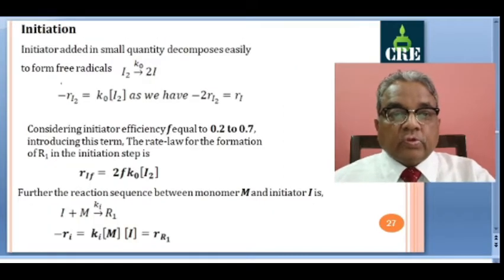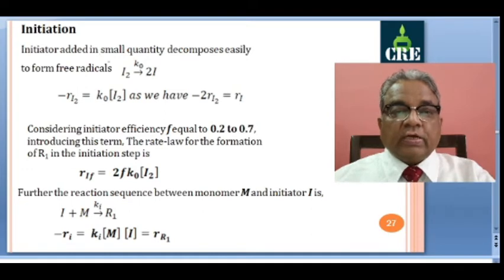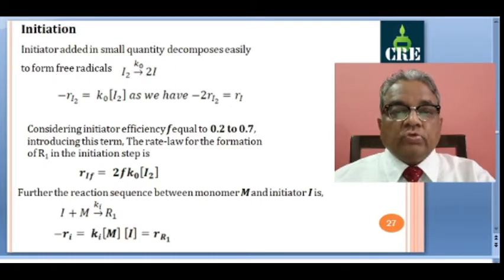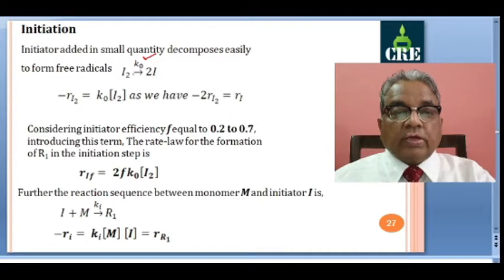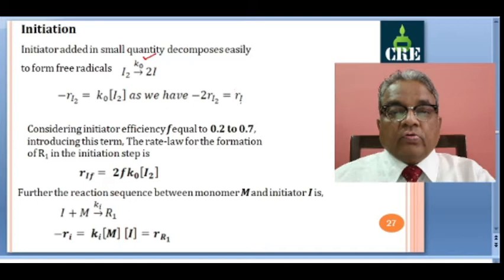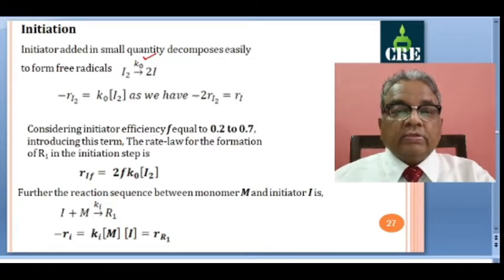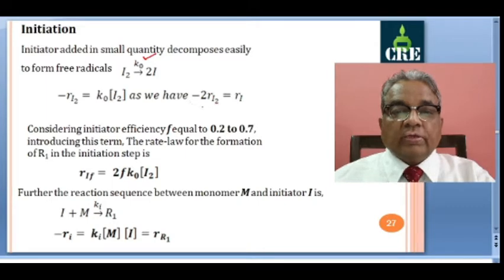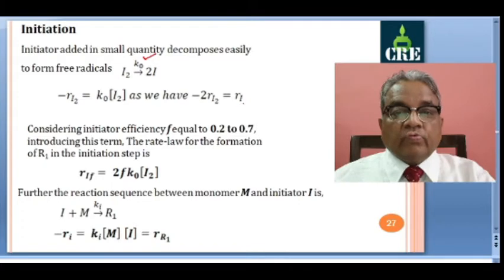The first step is initiation. The initiator is added in very small quantity and it decomposes to form free radicals. Initiator I2 gives you 2I, where I is a free radical, with rate constant K0. The rate of disappearance of I2 is K0 times the concentration of I2. The rate of formation of radical I is twice the rate of disappearance of I2.